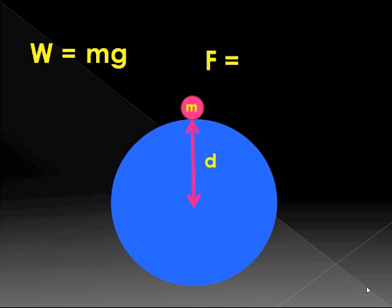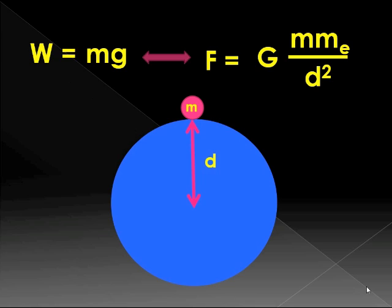Well, Newton had another formula that also told us the force pulling that mass down, G m m e over d squared. Now, both have to tell us the same answer. Both will tell us the force in newtons pulling that mass m to the center of the earth.